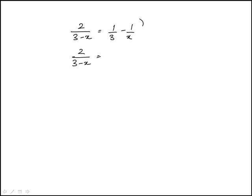I'll combine the fractions on the right side here, so this is x minus 3 over 3x. Multiply that, that's your denominator, and then x minus 3.